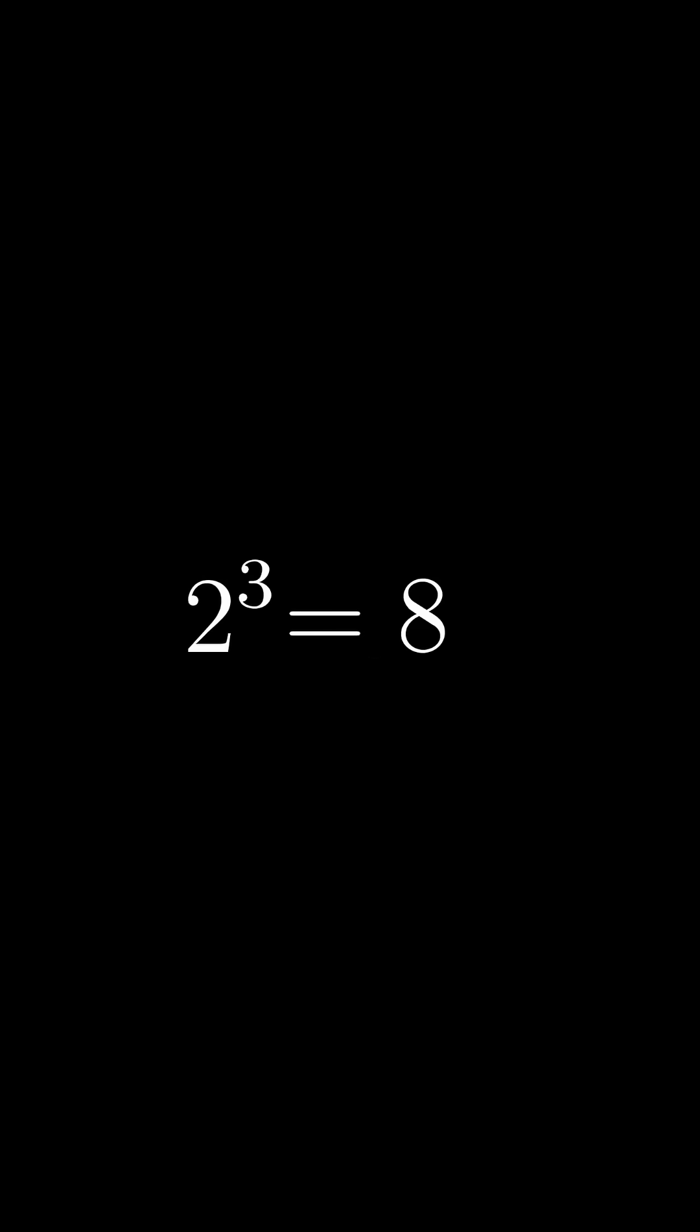If you write 2 cubed equals 8, it's the relative position of the 3 over the 2 that indicates the operation. But when you write the cube root of 8 equals 2, which is the same fact, you introduce this new squiggly radical symbol. And then writing log base 2 of 8 equals 3, again the same fact, you write out a word for the operation.